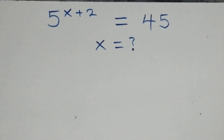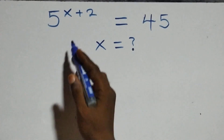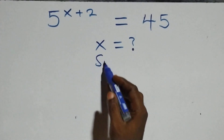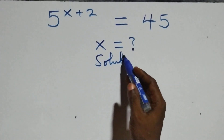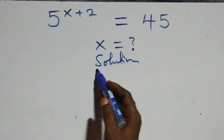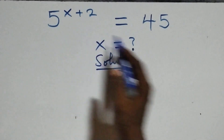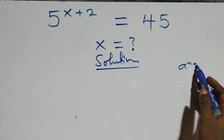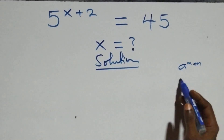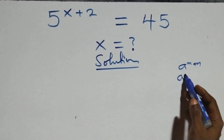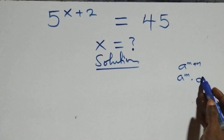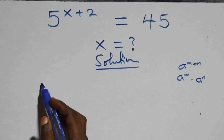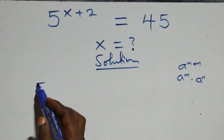Hello, you're welcome. How to solve this nice exponential equation. What we have here follows from the rule: a raised to power n plus n is the same thing as a raised to power n times a raised to power n. This becomes 5 raised to power x times 5 squared.